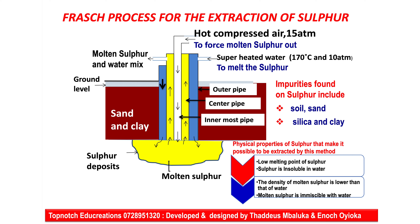You may be asked what impurities are found in sulfur extracted through this process — these include soil, sand, silica, and clay. You may also be asked about the physical properties that make this extraction method possible: sulfur has a low melting point; molten sulfur is insoluble in water; the density of molten sulfur is lower than that of water; and sulfur is immiscible with water and does not react with water.